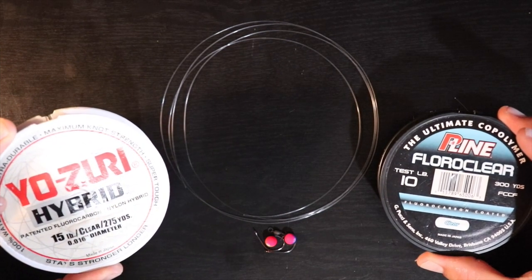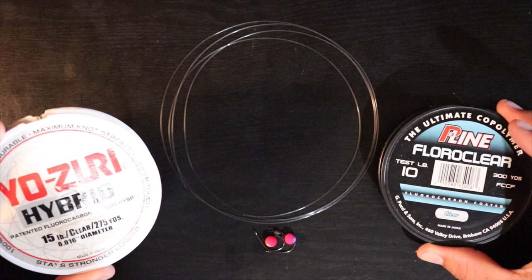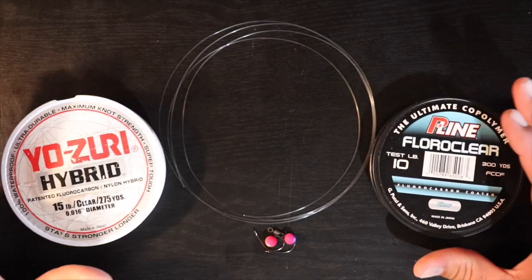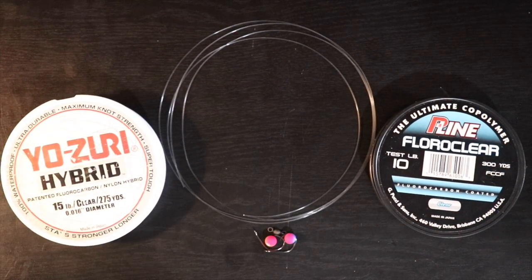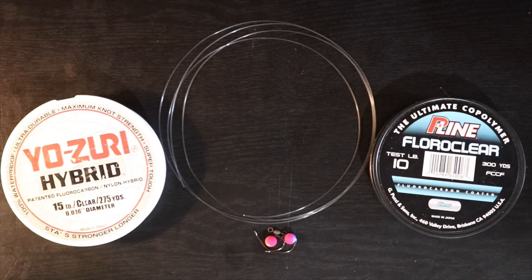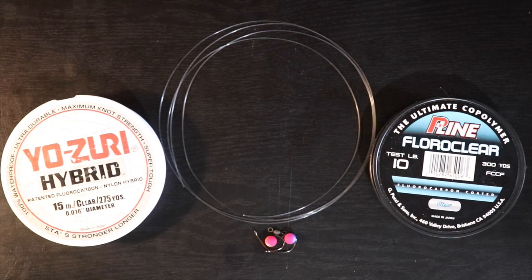This one over here is the Yo-Zuri 15 pound, and I really like to stick with the fluorocarbon when going with these fish. It just kind of helps that line hide a little bit, I think. I've had the best success with it, so that's what I stick with.